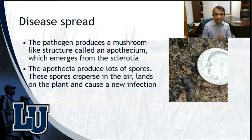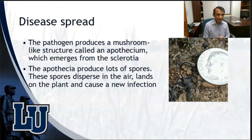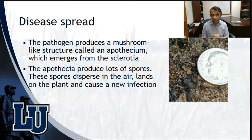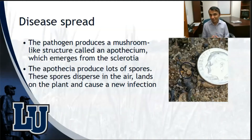The sclerotia of Sclerotinia minor and Sclerotinia sclerotiorum infect the lettuce crop in different manners. Most of the time, sclerotia of Sclerotinia minor infects the crop directly, whereas Sclerotinia sclerotiorum produces a mushroom-like structure called an apothecium, as can be seen in the photograph. This mushroom-like structure, or apothecia, produces lots of ascospores which can be dispersed by wind currents, and these spores land on plant surfaces and eventually cause new infection.